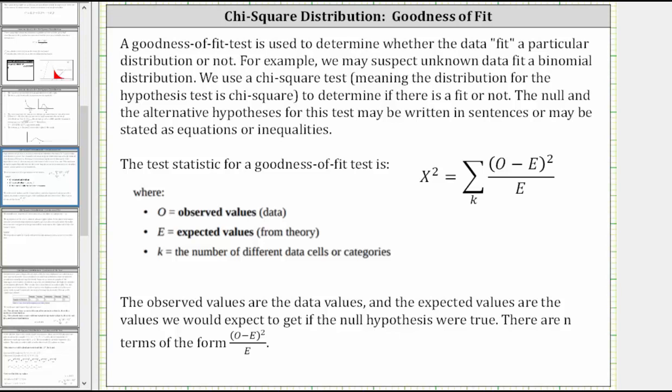Welcome to a lesson on the goodness of fit test for a chi-square distribution. A goodness of fit test is used to determine whether the data fit a particular distribution or not. For example, we may suspect unknown data fit a binomial distribution.